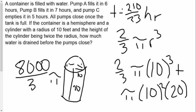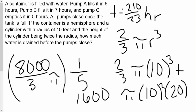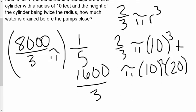Now from here we are going to try to figure out how much water is draining per hour. And we know that pump C is emptying it at a rate of five hours. So we divide this by five. So eight thousand divided by five is sixteen hundred. So we have sixteen hundred over three pi. Now this is how much is draining per hour.